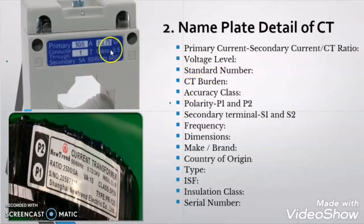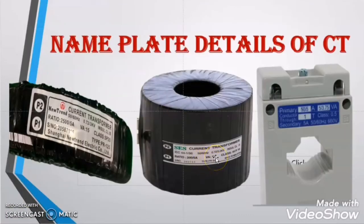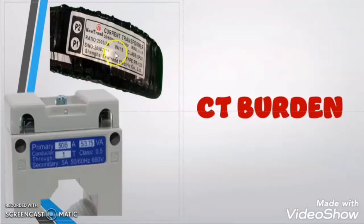In the current transformer nameplate, you will find some VA value. For example, in this CT, the VA value is given as 5/3.75. In this current transformer, the VA value is given as 15. And in other CT, for example, this CT has the VA value given as 15. So what is this VA value and what does it represent in the current transformer, and what is the significance of this VA? We will learn in this video. This VA value in the CT nameplate is nothing but the CT burden.